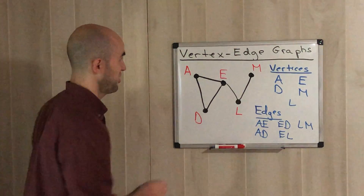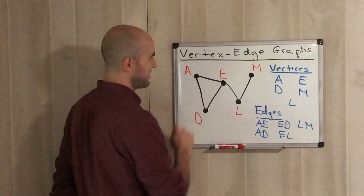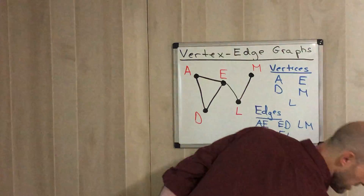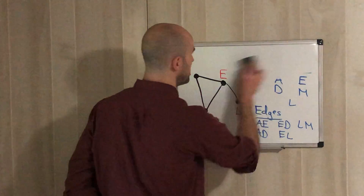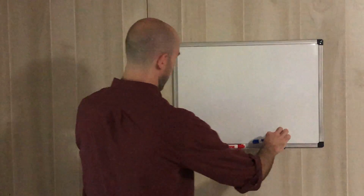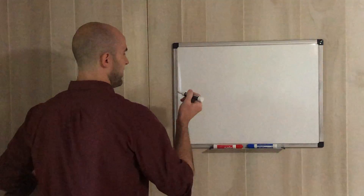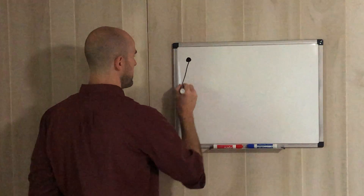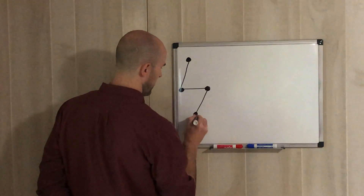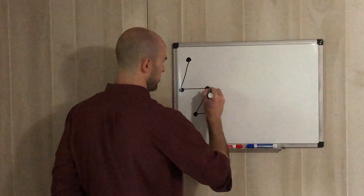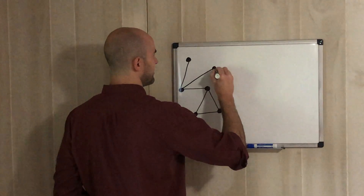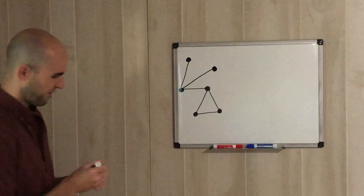A vertex edge graph is just a bunch of vertices — points — and a bunch of edges connecting them, which are segments. There are certain things about vertex edge graphs I need you to get comfortable analyzing. These graphs can look extremely unique, so I'll draw another one for you to see.